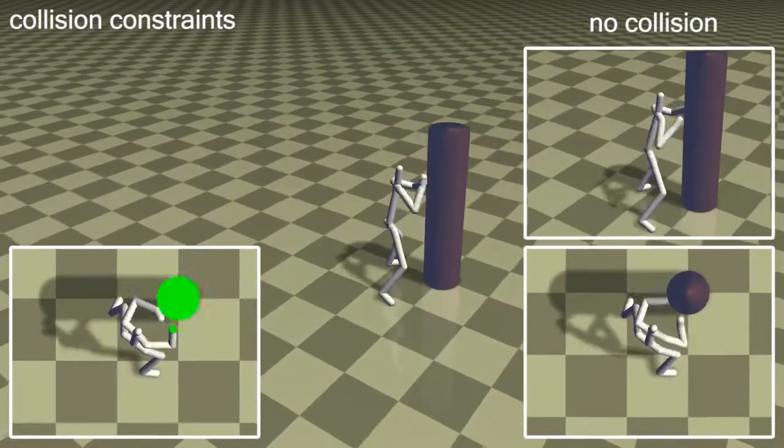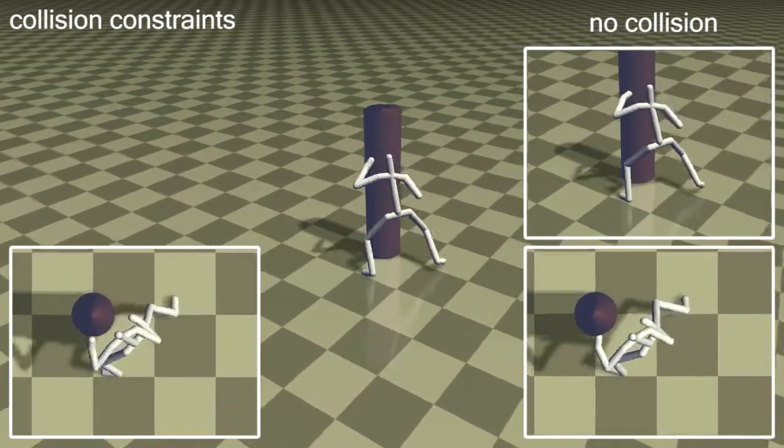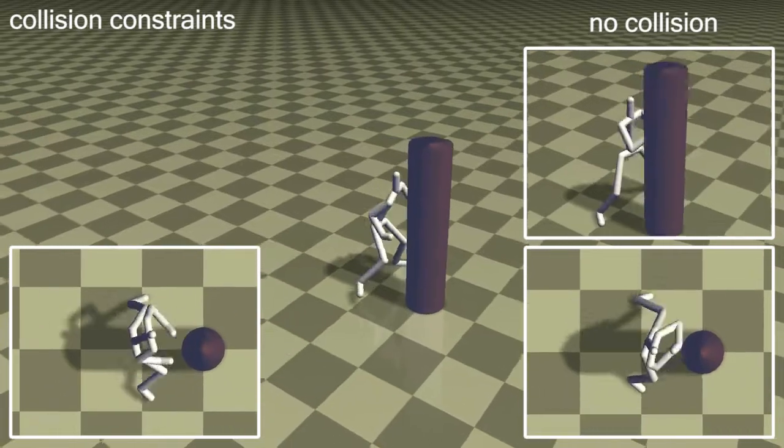We can also apply constraints to the character during synthesis. Here, the character's limbs are prevented from intersecting the cylinder, producing a more plausible animation.